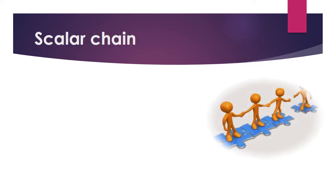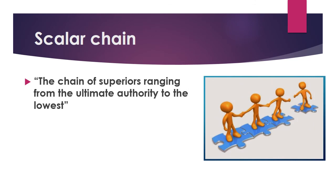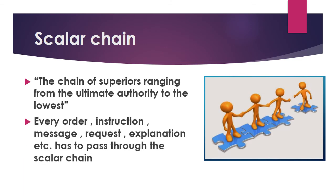The next principle is Scalar Chain. The scalar chain is the chain of superiors ranging from the ultimate authority to the lowest level — the line of authority from the top of the organization to the bottom. Orders, instructions, messages, requests, and explanations should flow through the scalar chain.